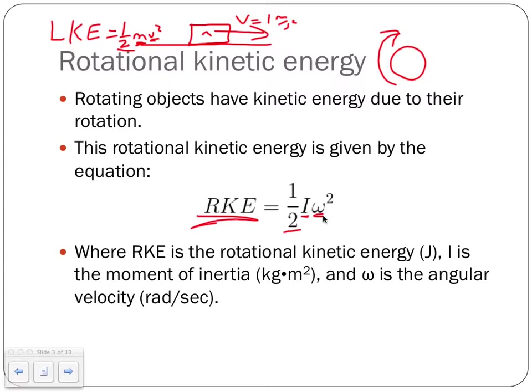You can see the analogy between the two equations. We have one-half out front just like in linear kinetic energy. Instead of mass, we have moment of inertia; instead of velocity, we have angular velocity omega. If two objects spin at the same rate, the one with higher moment of inertia has higher rotational kinetic energy — just as the heavier object has higher linear kinetic energy.